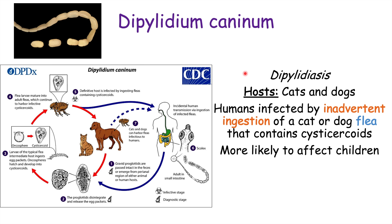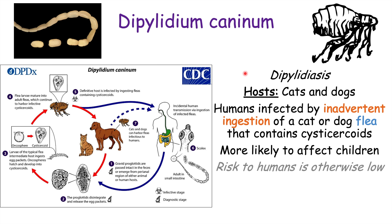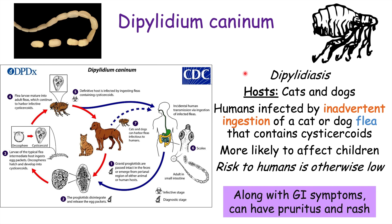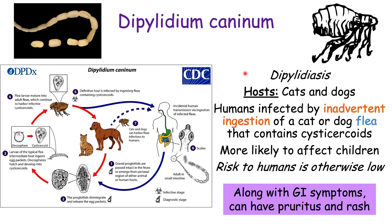This is more likely to occur in children, and overall the risk to humans is otherwise low. Along with the GI symptoms discussed before, a Dipylidium caninum infection can cause pruritus — an itching sensation and rash — due to an allergic reaction to the particular tapeworm.